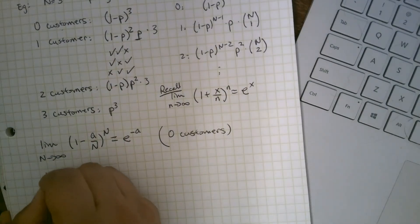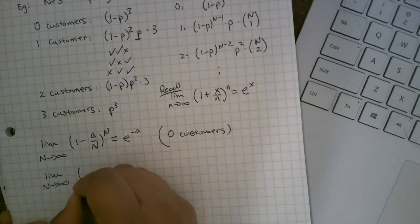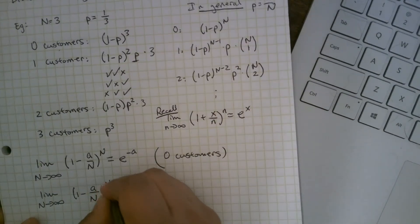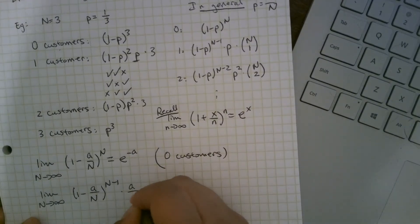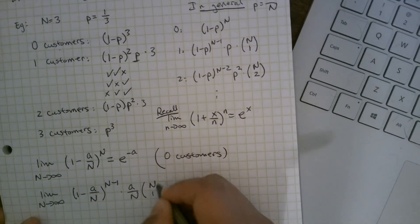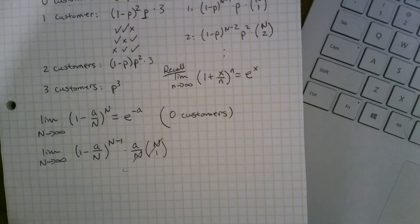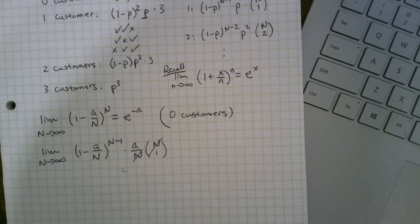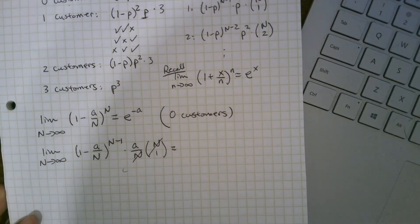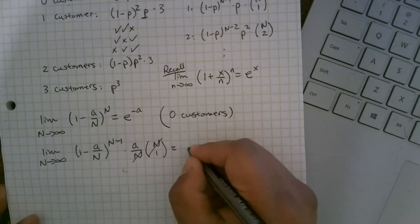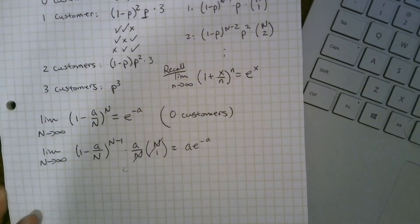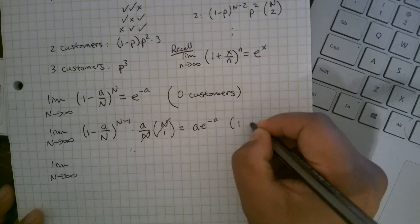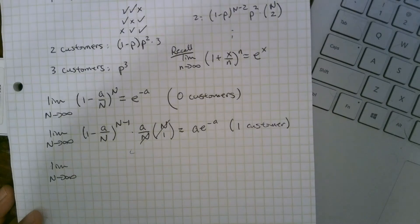For one customer: (1 - a/n)^(n-1) · (a/n) · n-choose-1. Since n-choose-1 is just n, the n's cancel. As n gets large, n - 1 grows at about the same rate as n, so (1 - a/n)^(n-1) is still e^(-a) in the limit. Multiplied by a, the probability of one customer is a · e^(-a). We've shown this mathematically — the size of the chunks doesn't matter.